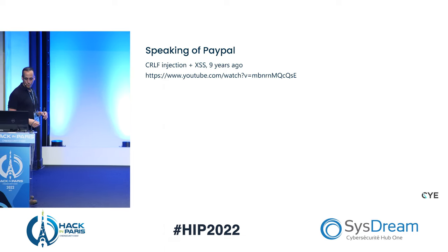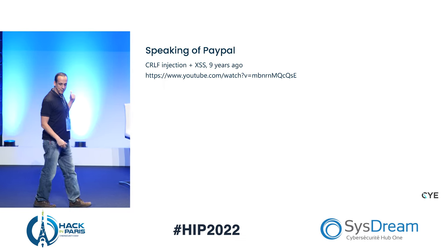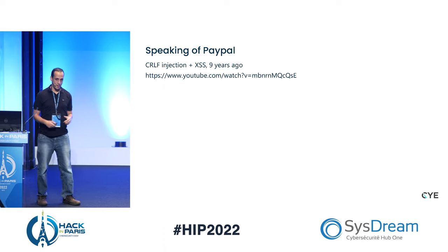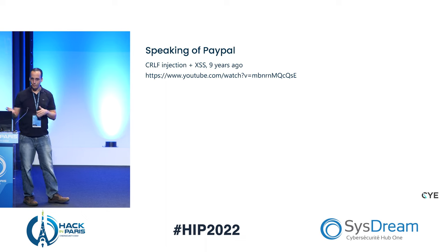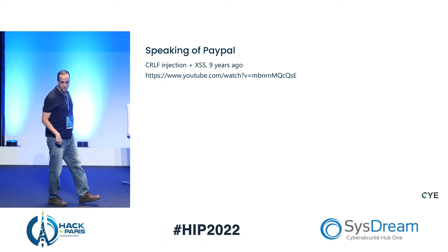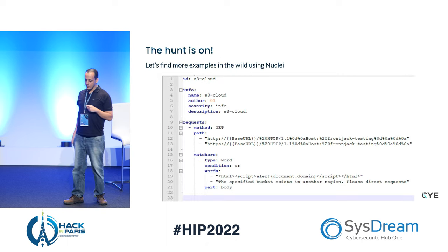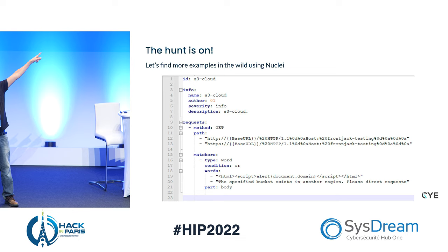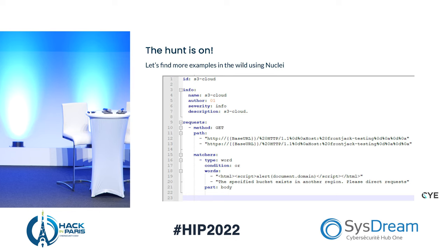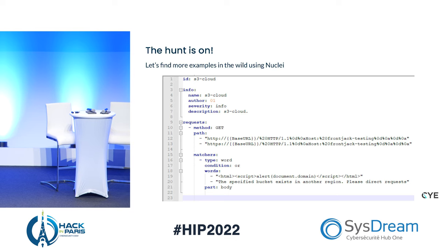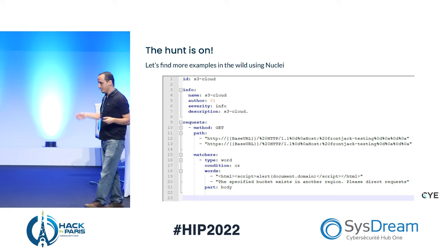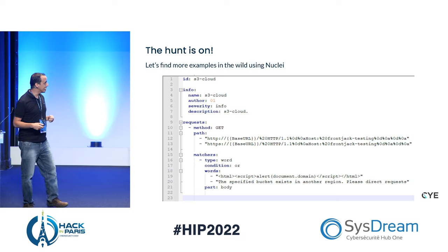Then we started looking for it in the wild. We created a Nuclei template to search it on Google Cloud — injecting our own GitHub Page called 'XSS test' and searching for our own response. We also searched in AWS S3: we redirect to our own bucket called 'front-jack-testing', and either get our response or an AWS error saying the specified bucket exists in another region — then we just brute force through the regions, since you need to be in the same region as the reverse proxy. AWS actually tells you the region, so it's easy to find front-jacking vulnerabilities this way.